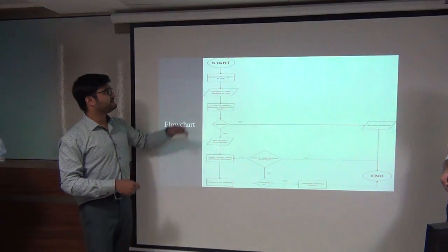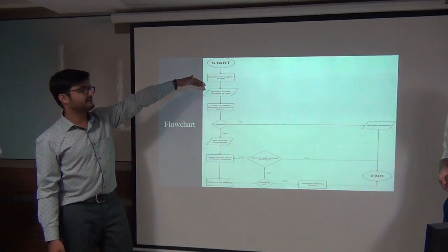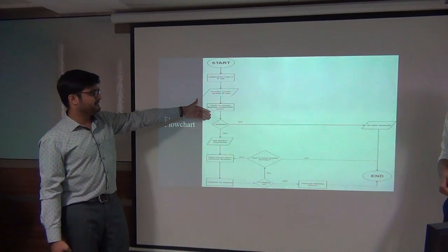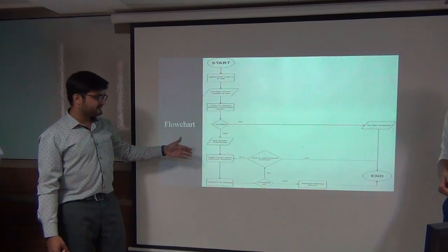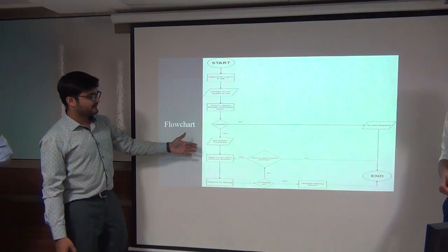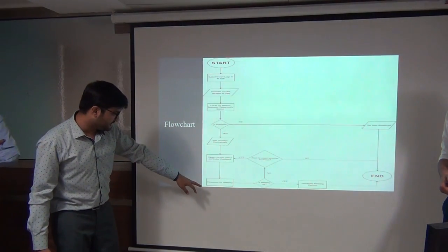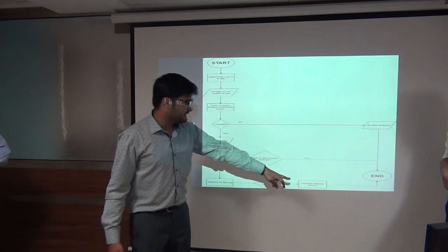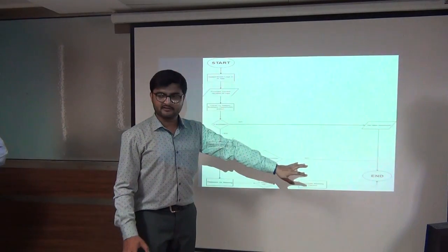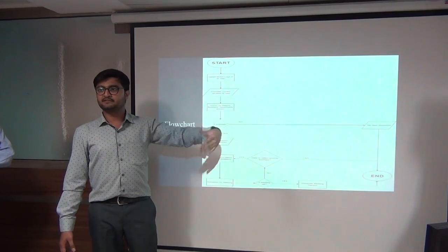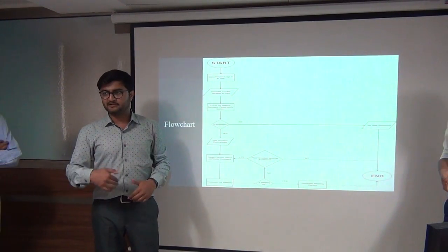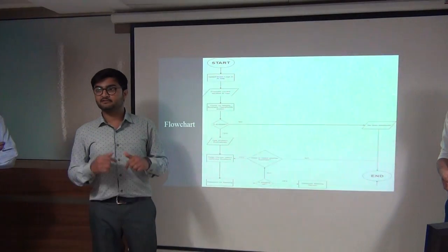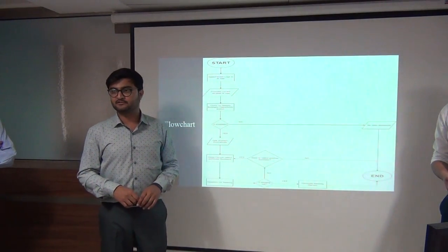This is the flowchart. After the salesperson logs into the app, the current location is automatically fetched by the Google API. It searches for nearby business requirements. If requirements are available, the application displays them. The salesperson selects a requirement they are interested in and requests a meeting with the company or restaurant. If the meeting happens, the salesperson generates a record, which is stored in the database. Both the company and salesperson can view it — even after one, two, or five years.